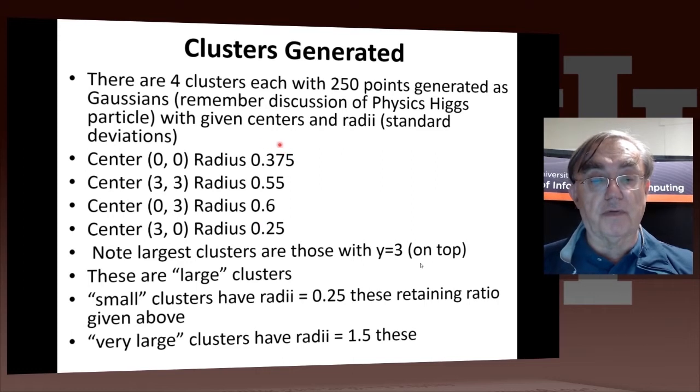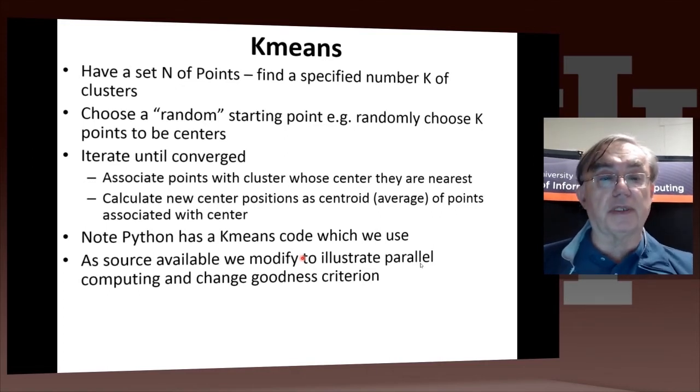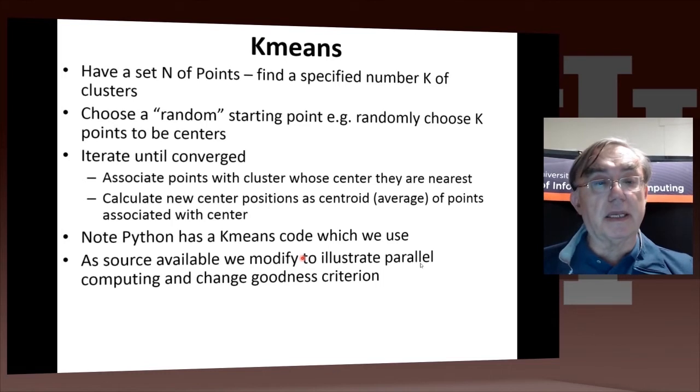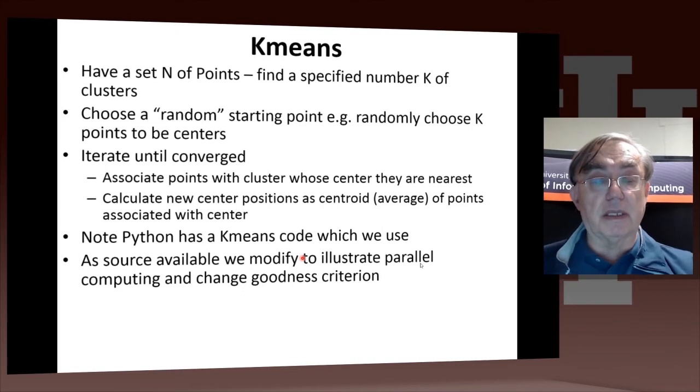Let's remember what k-means does. We have a set of points. We want to find a specified number, k clusters for those points. We choose a random starting point. Typically what you do when you have a set of points is you don't generate the centers randomly in the space. We just take actual k of the points, leaving n minus k not to be centers and k to be centers. This at least ensures that your centers have to be at least near one point, because they're exactly equal to one point.